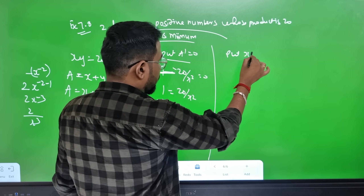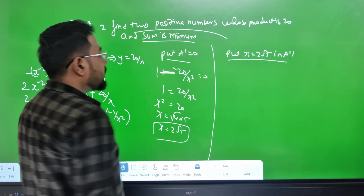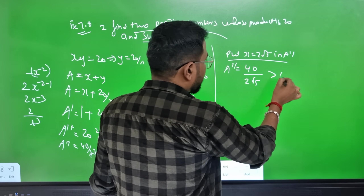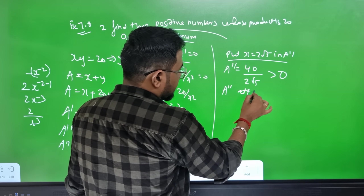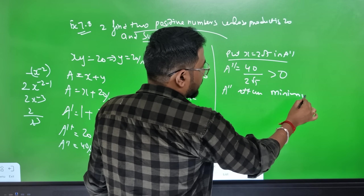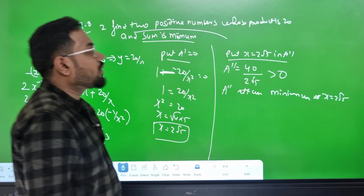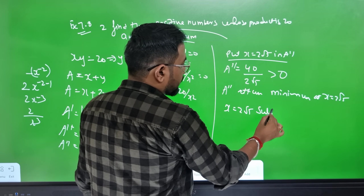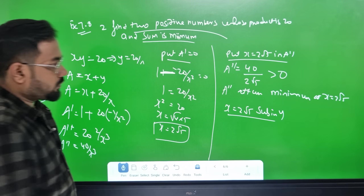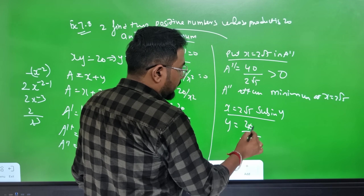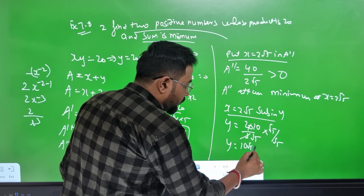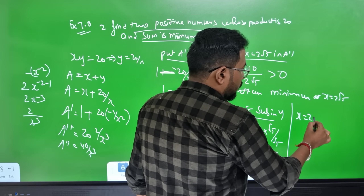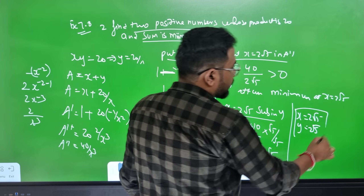At x = 2√5, the second derivative S'' is positive, confirming a minimum. Both numbers are x = 2√5 and y = 20/x = 20/(2√5) = 2√5. So both positive numbers are 2√5.